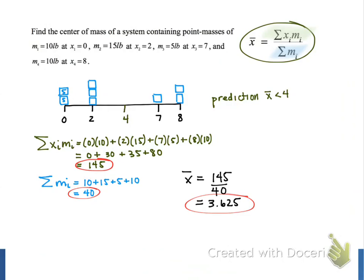Now, if we go back to our sketch, we see that x bar equals 3.625 is just a little bit less than 4, and that matches our earlier prediction, that we would have to move that balancing point to the left of x equals 4 for our teeter-totter to balance.